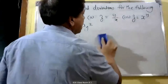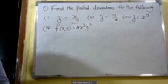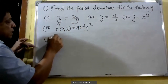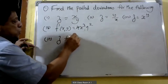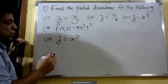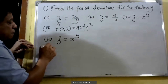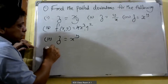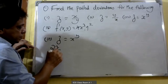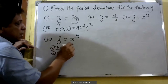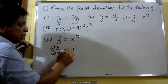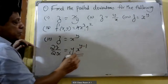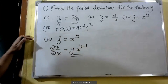Then we can do the third problem. z is equal to x raised to y. Partially differentiating with respect to x — here y is a constant — therefore ∂z/∂x = y into x raised to y minus 1.